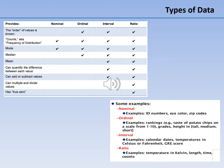Interval scales are numeric scales in which we know not only the order, but also the exact difference between the values. A classic example of an interval scale is the Celsius temperature scale, because the difference between each value is the same. For example, the difference between 60 and 50 degrees is a measurable 10 degrees, as is the difference between 80 and 70 degrees. Time is another good example of an interval scale in which the increments are known, consistent, and measurable.